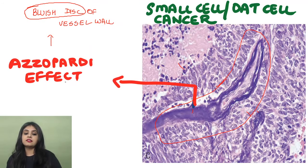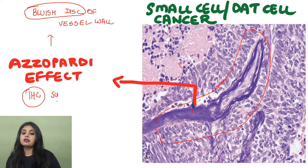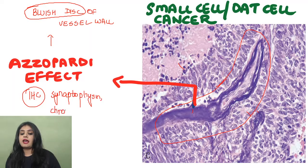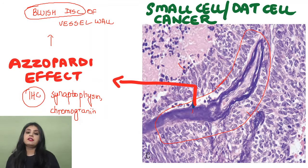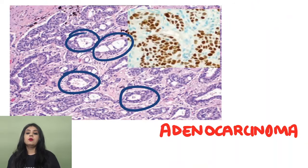For immunohistochemical markers of small cell lung cancer, please remember it is positive for synaptophysin and chromogranin.